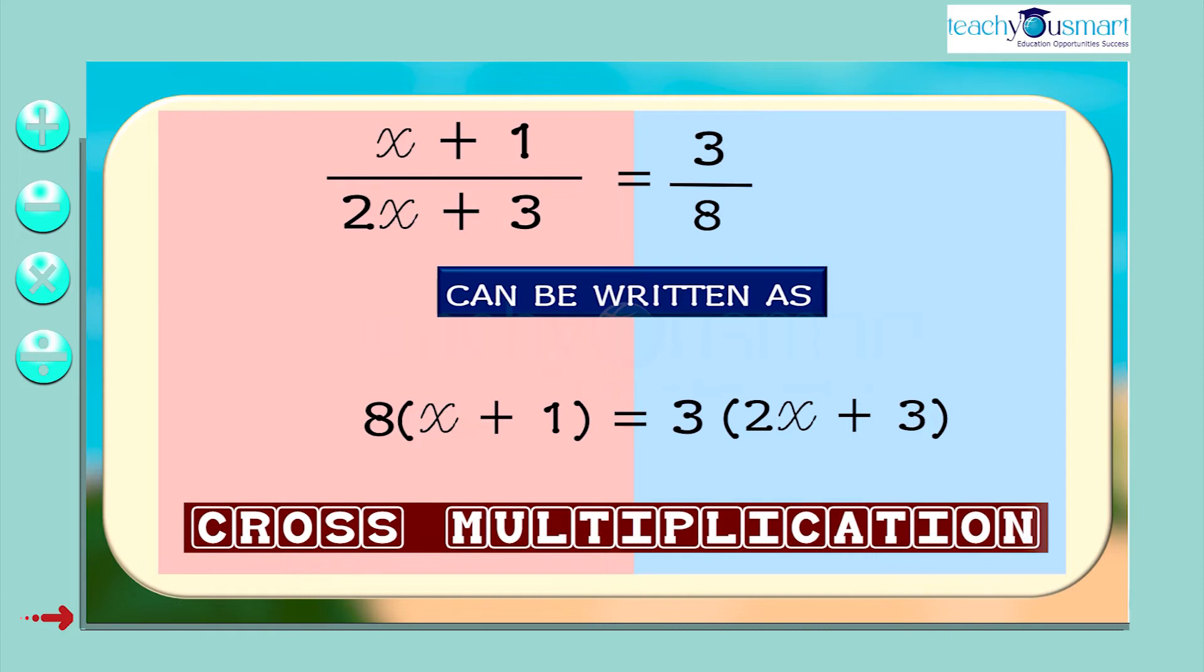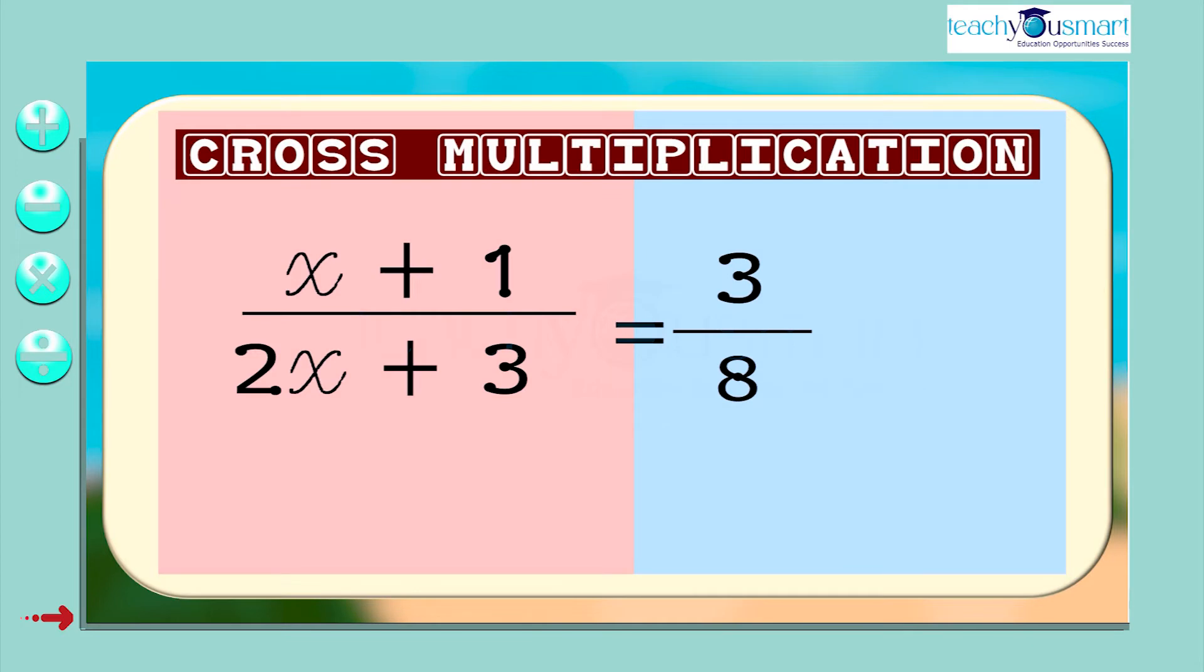So instead of these steps, we can straightly apply the cross multiplication method. x plus 1 divided by 2x plus 3 equals 3 by 8 will change to 8 multiplied by x plus 1 equals 3 multiplied by 2x plus 3.